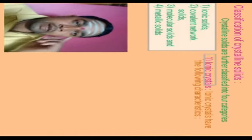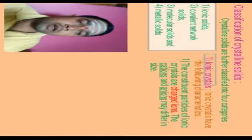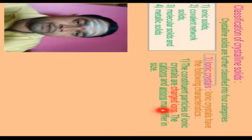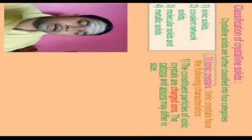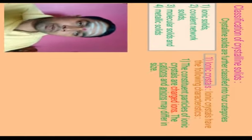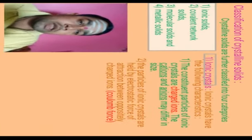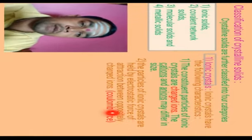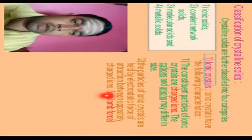Ionic crystals have the following characteristics. The constituent particles of ionic crystals are charged ions. The cations and anions may differ in their size depending upon the crystalline structure — for example, CaCO₃ and NaCl differ in their atomic proportions and crystalline coordinates. The particles of ionic crystals are held together by electrostatic forces of attraction between oppositely charged ions, also called Coulomb forces.